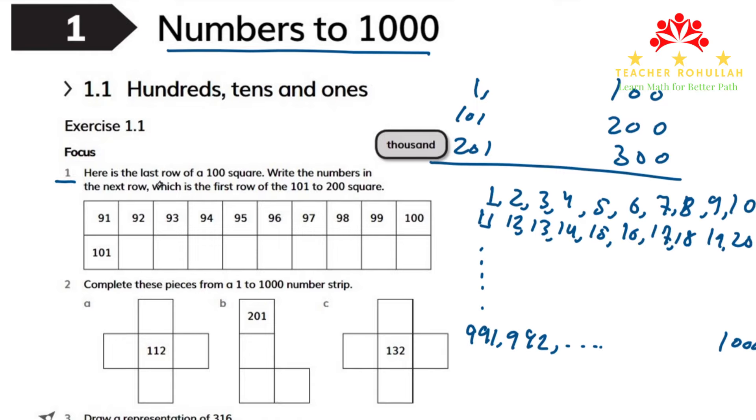In question number 1, it says, here is the last row of 100 square. Write the numbers in the next row, which is the first row of a 101 to 200 square. So we can write 101, 102, 103, 104,